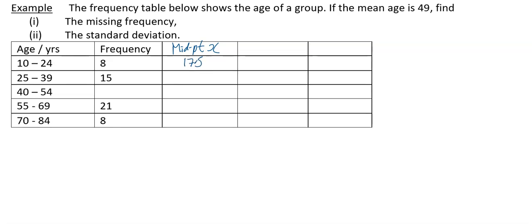The next group, the boundaries are 25 to 40. 25 plus 40 is 65 divided by 2 is 32.5. The next group, the boundaries are 40 and 55, which is 95 divided by 2 giving you 47.5. And I'll just do the last two. They're going to be 62.5 and 77.5.